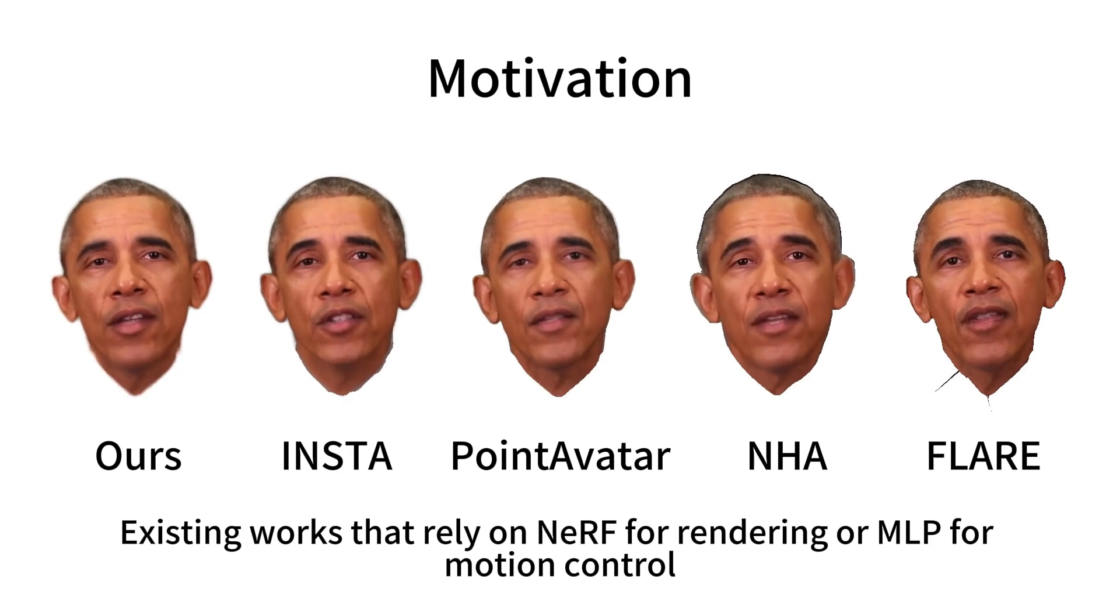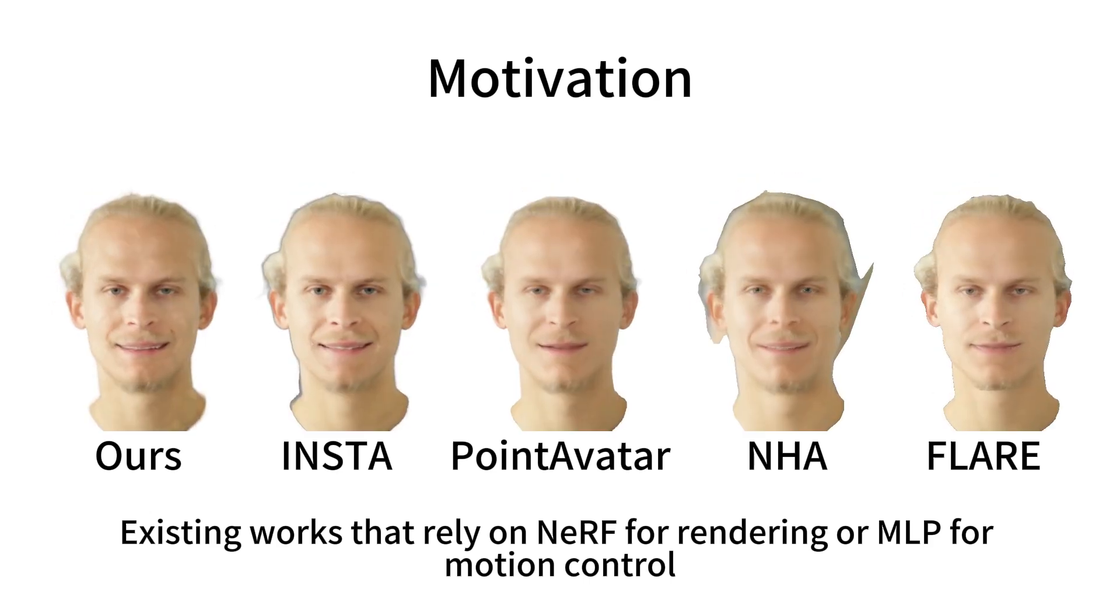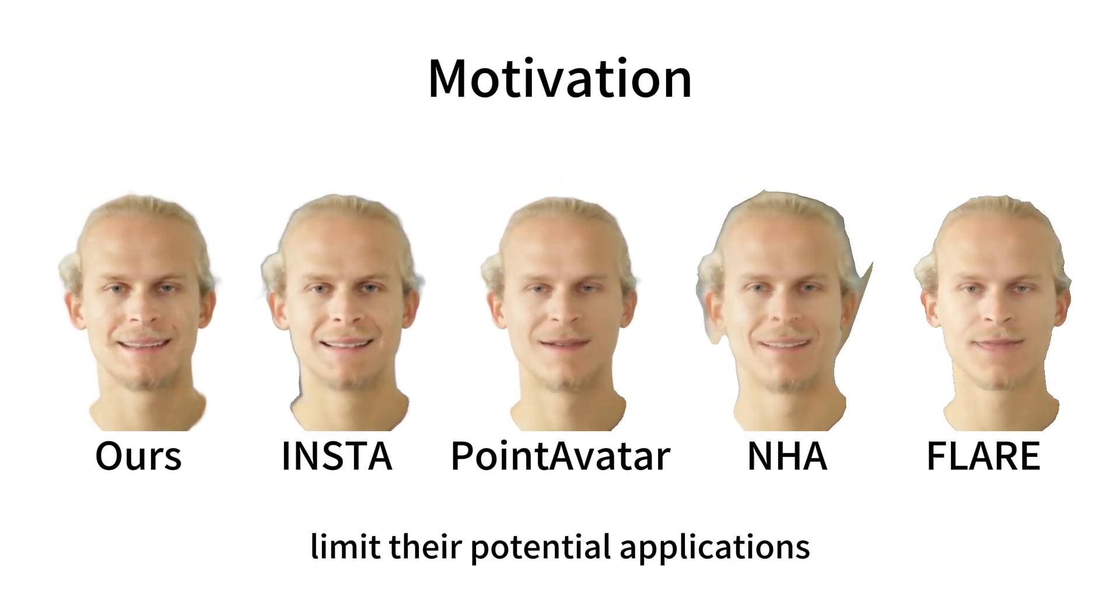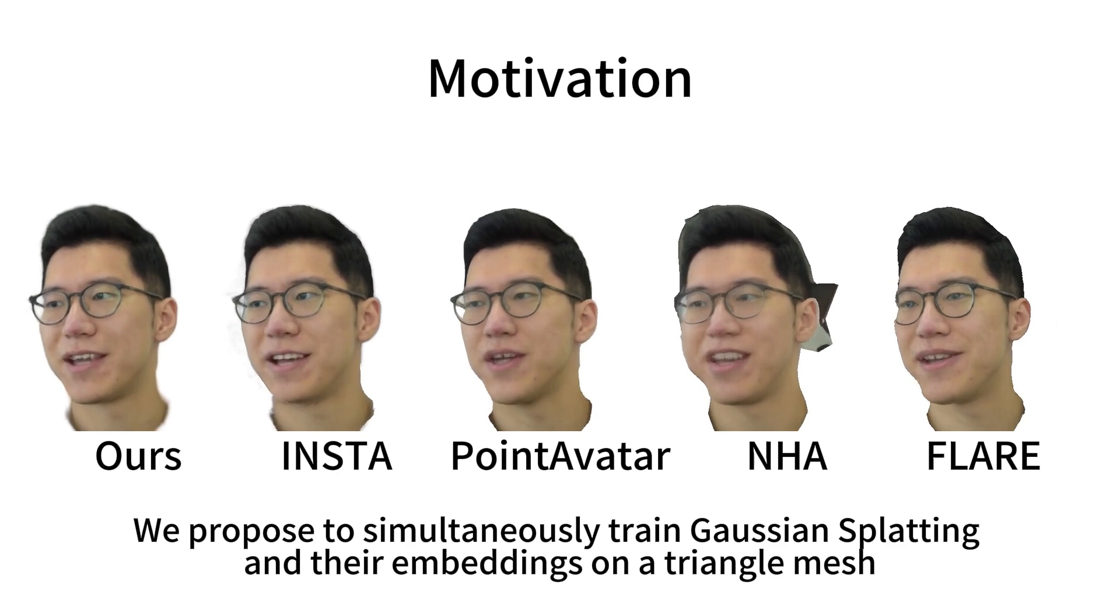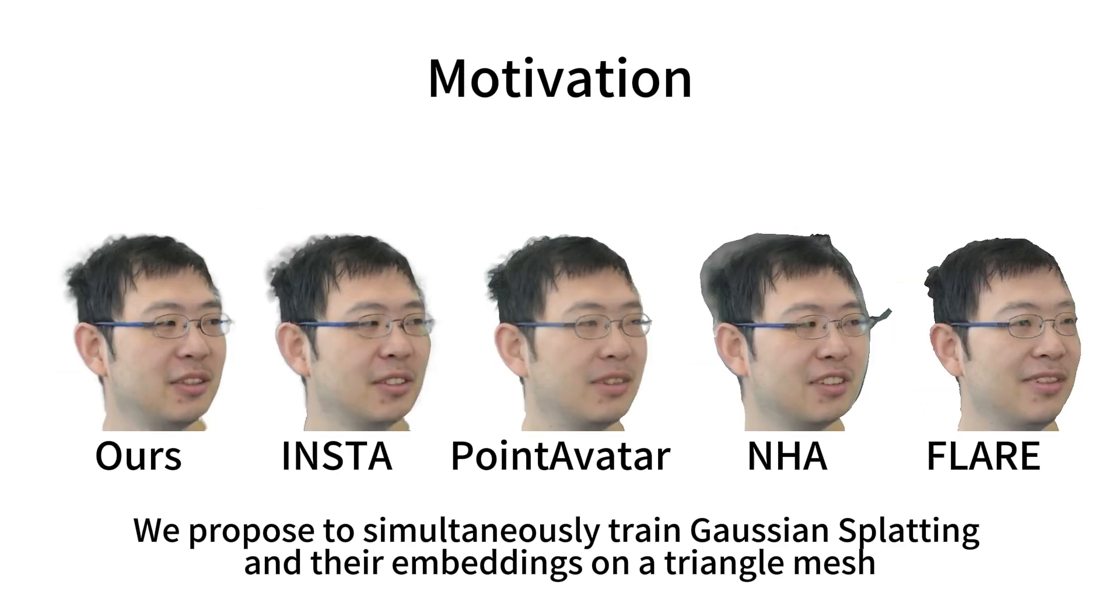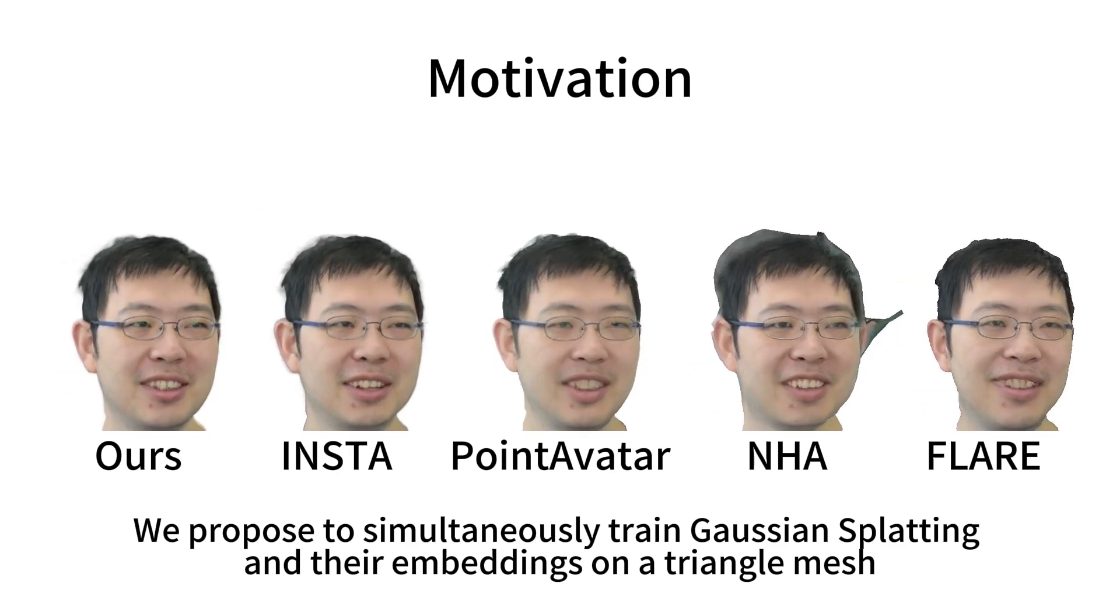Existing works that rely on NeRF for rendering or MLP for motion control limit their potential applications. We propose to simultaneously train Gaussian splatting and their embeddings on a triangle mesh.